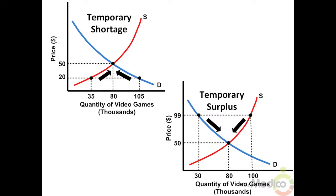A surplus occurs within a market when the quantity supplied exceeds the quantity demanded. Assuming no government price controls, a surplus is temporary and market forces will push the price back down toward equilibrium. If the government establishes an effective price floor — a legal minimum price above the market price — the surplus becomes long term.